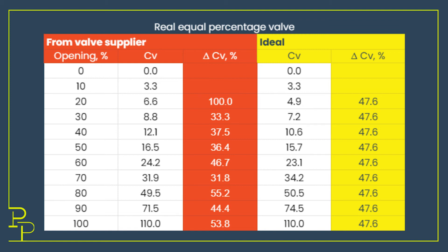You can see that if it followed the equation perfectly it would have a constant increase in CV of 48% for every additional 10% that the valve opens, but the actual change varies between 33 and 100%.